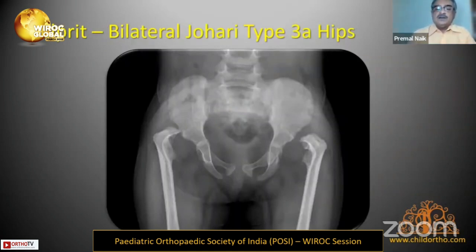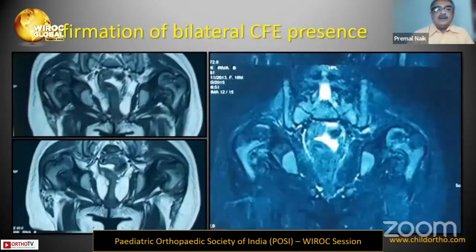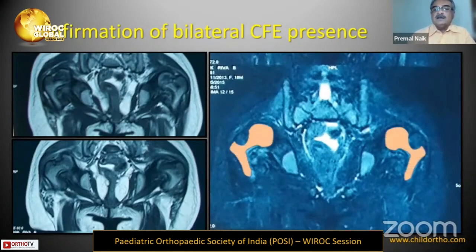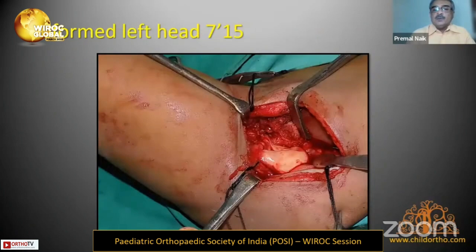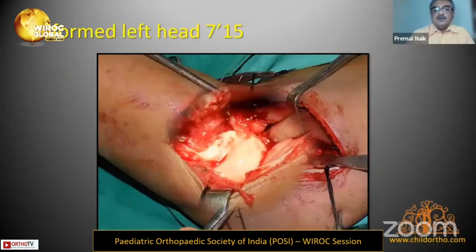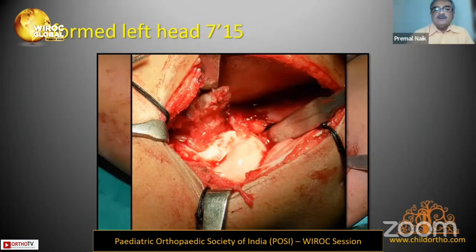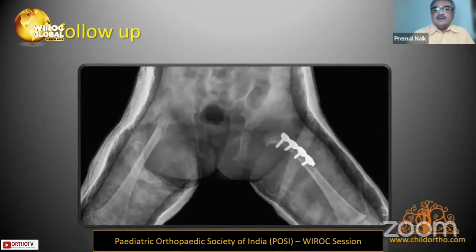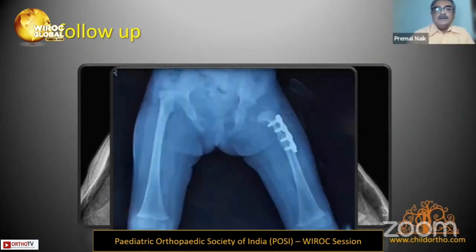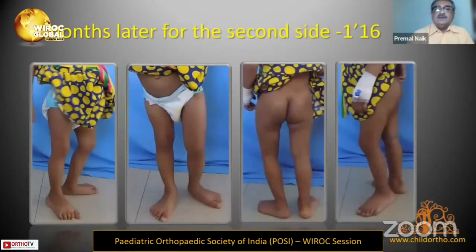In 2010, with easy availability of MRI as suggested by Dr. Jhori, we found bilateral good capital femoral epiphysis. Treatment was managed like DDH. On open reduction, there was a significantly depressed central part of the femoral head, which was slightly larger than it appeared. Surgery was performed with femoral shortening without a pelvic procedure, and at follow-up the CFE was enlarging.